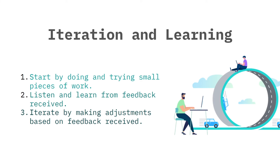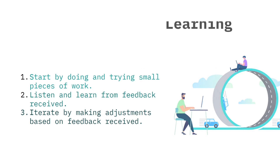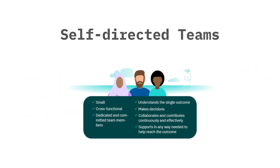Next we have iteration and learning. This starts off by doing and trying small pieces of work. You then listen and learn from the feedback received and iterate by making adjustments based on that feedback. Finally we have self-directed teams — a small team constructed to do the work, made up of selected individuals that have the right set of skills. Members are encouraged to be part of the decision-making process.